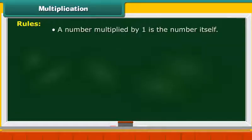Let us look at some rules of multiplication. A number multiplied by 1 is the number itself. 9876 multiplied by 1 is equal to 9876.